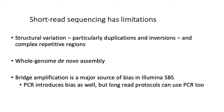Detecting structural variation in a genome is pretty difficult with short read sequencing. Basically, when you have a reference genome and you're sequencing a new genome and you want to detect events like duplications or inversions, you typically need reads that span the boundaries of where the inversion happened in order to actually detect it. Having reads that span these kind of boundaries is easier when you have longer reads.